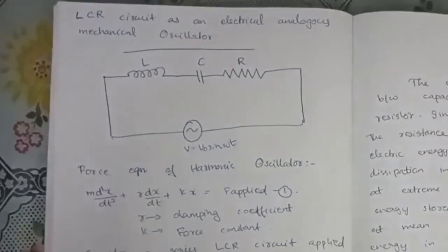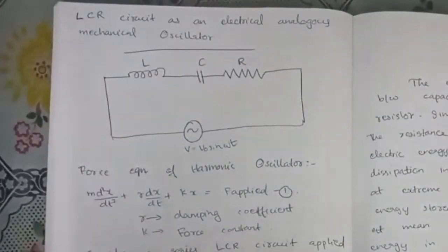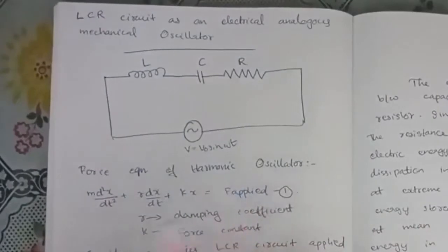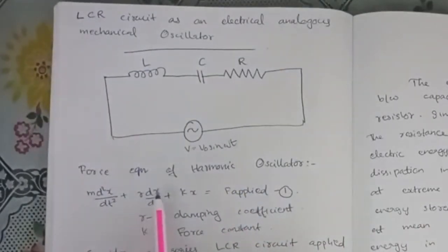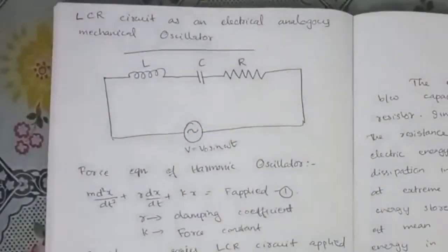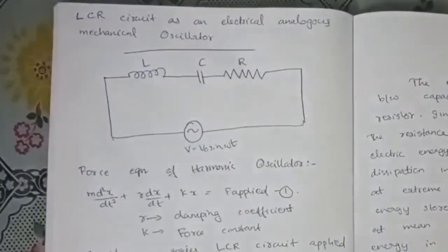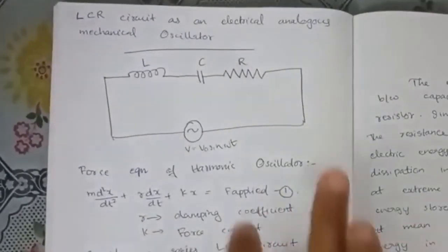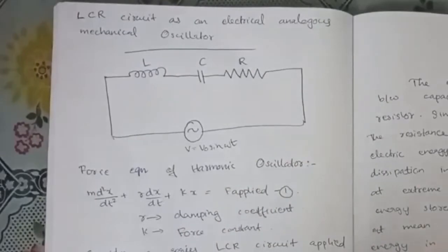This is the force equation — that is the harmonic oscillator force equation we are learning: M into d²x/dt² plus gamma into dx/dt plus kx is equal to force applied. That is the total force. Gamma is the damping coefficient, and k is the force constant.